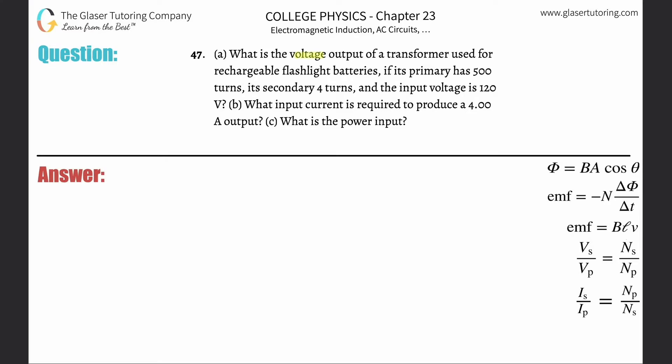Number 47, letter A. What is the voltage output of a transformer used for rechargeable flashlight batteries if its primary has 500 turns, secondary 4 turns, and the input voltage is 120 volts?